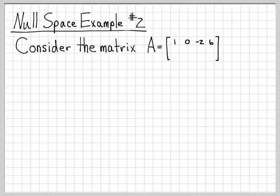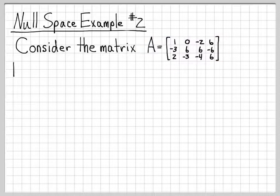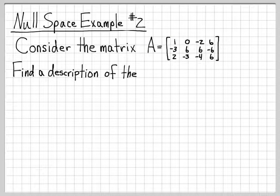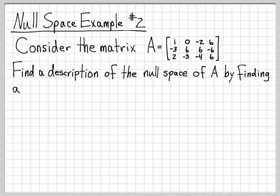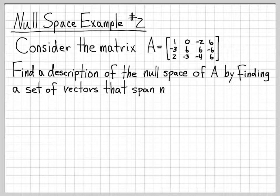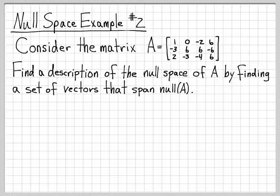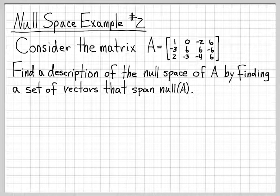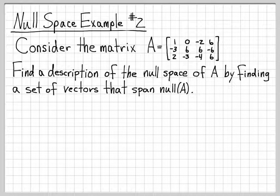So the matrix we're going to work with in this problem is a 3 by 4 matrix, A. And here is the matrix. And what we would like to do is we would like to find a full description of its null space. So we would like to be able to characterize all the elements of the null space of A. And we're going to do that by finding a set of vectors that span the null space. That will be our full description of every possible vector that can be in the null space. Because remember, the span of a set of vectors is all linear combinations. So we're going to find a compact way to write this infinite collection of vectors that comprise the null space of A.